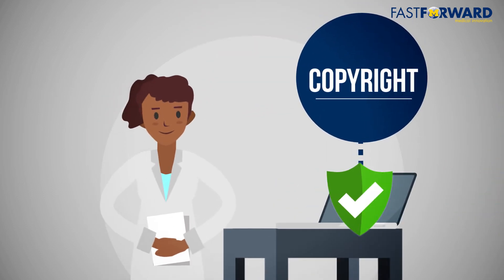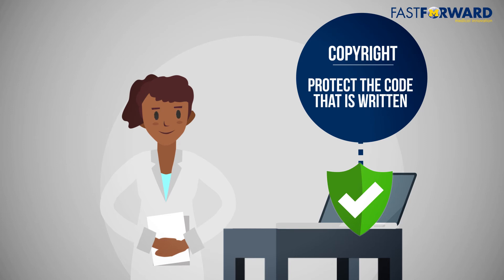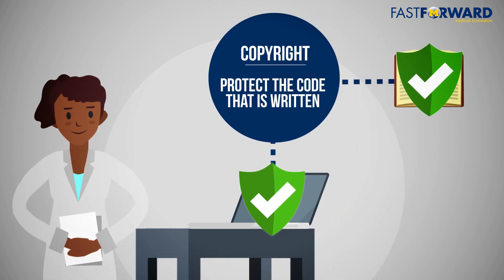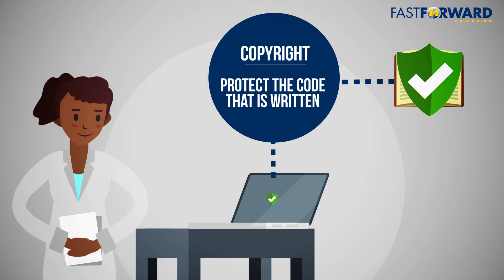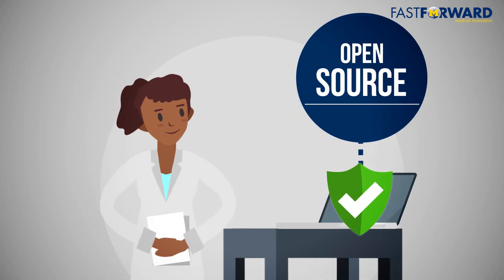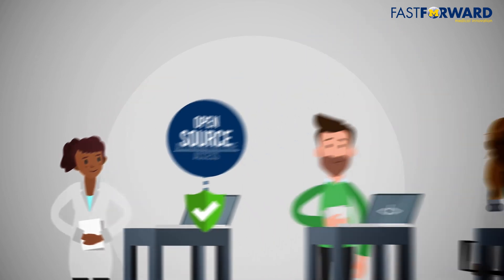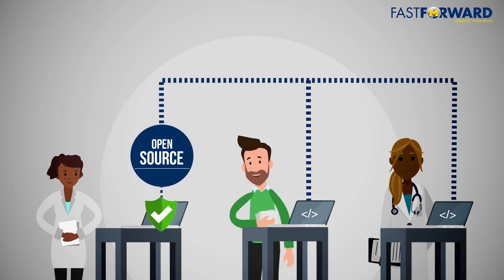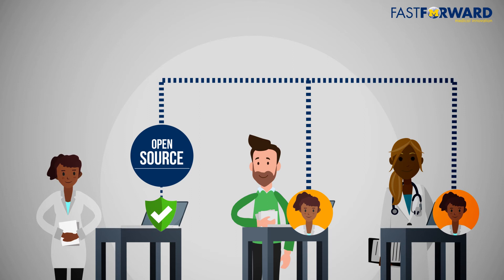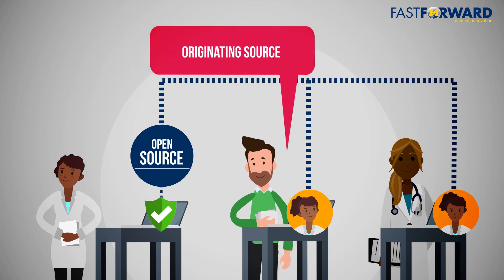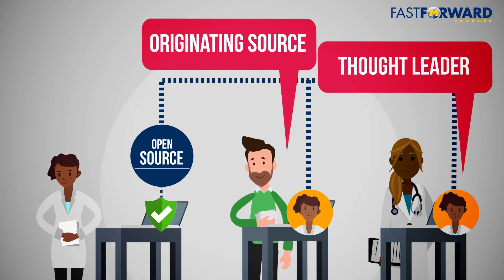Another option is copyright, which is your expression of that software in the form of the code that is written. Copyrights are automatic upon writing and provide absolute protection on that code, much like someone has protection on a book or a piece of artwork. However, copyrights are a relatively weak form of protection because the code isn't what the customer is interacting with directly, unlike reading a published novel. The third protection option is open source, which means allowing anyone access to the code and to manipulate and adjust it for their needs. This is a viable option for IP protection because open source code attributes back to the original developers. Most open source licenses will require a new user to declare where the source code came from and who developed it. If the highest value for you is to be known as the originating source or the thought leader in your field, this is a viable and appropriate option.